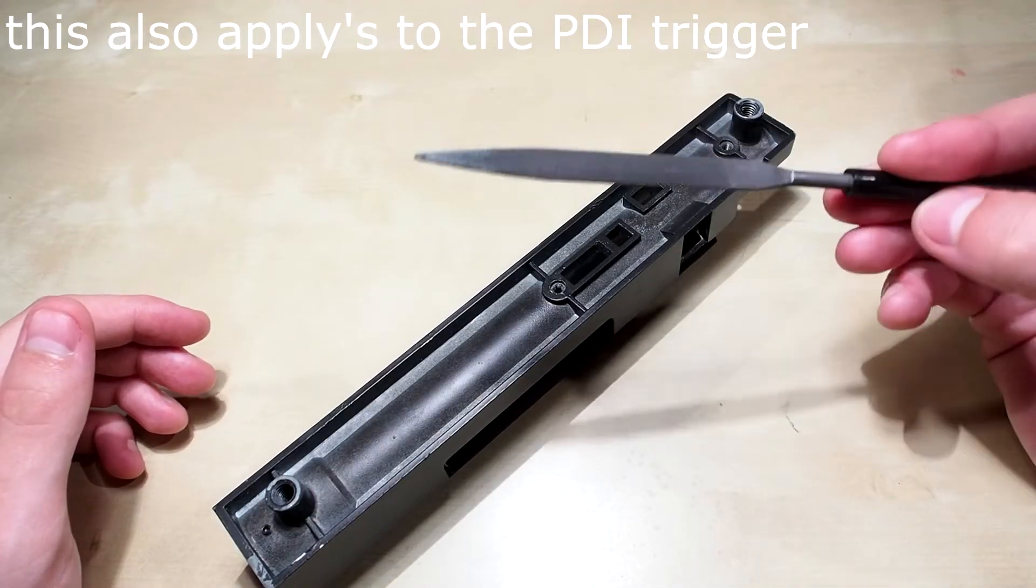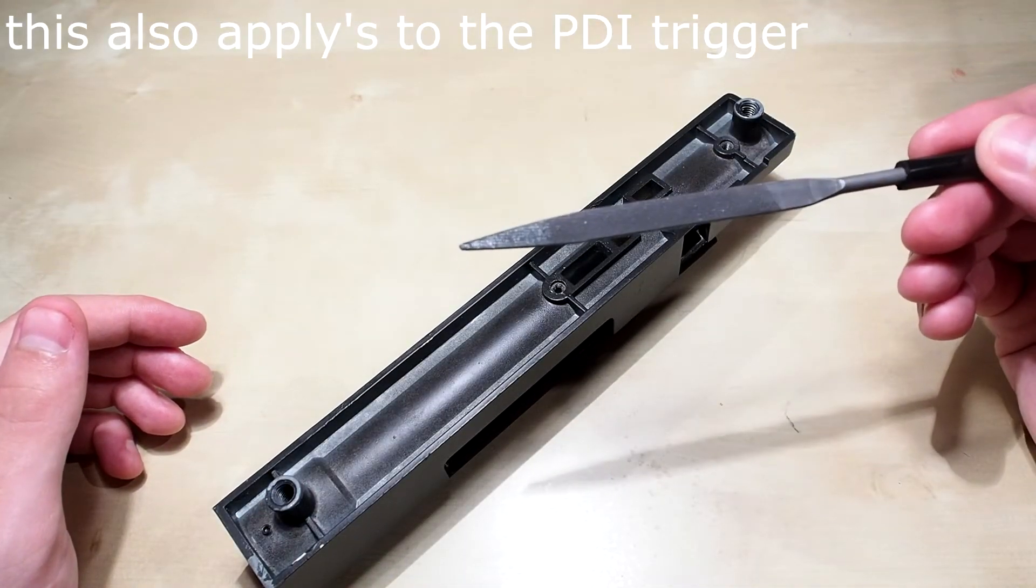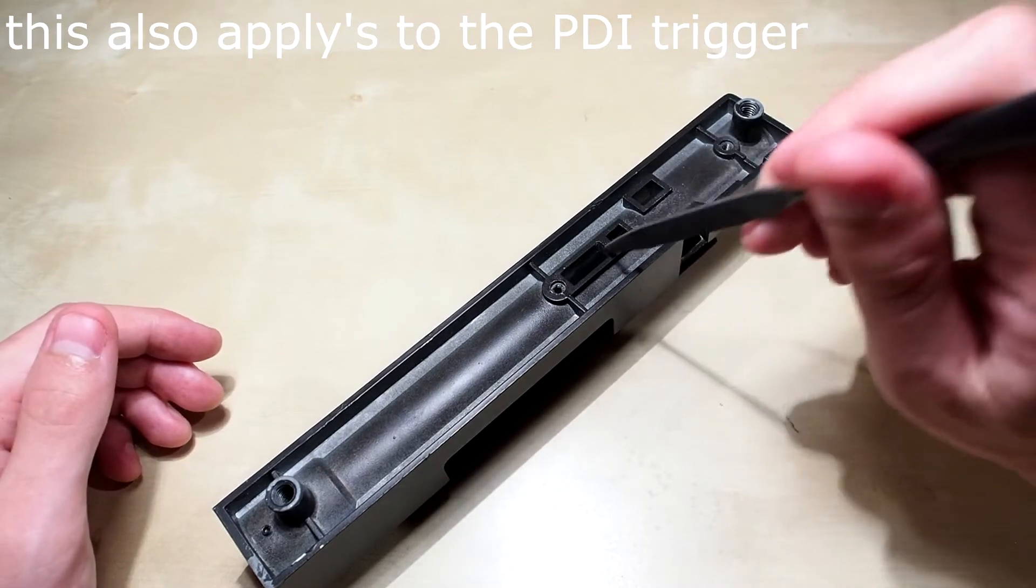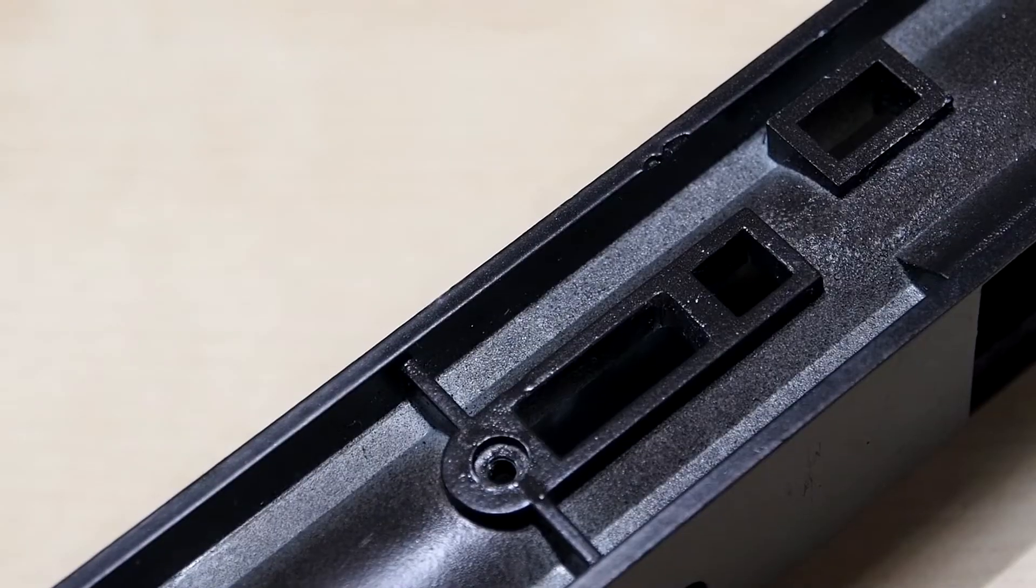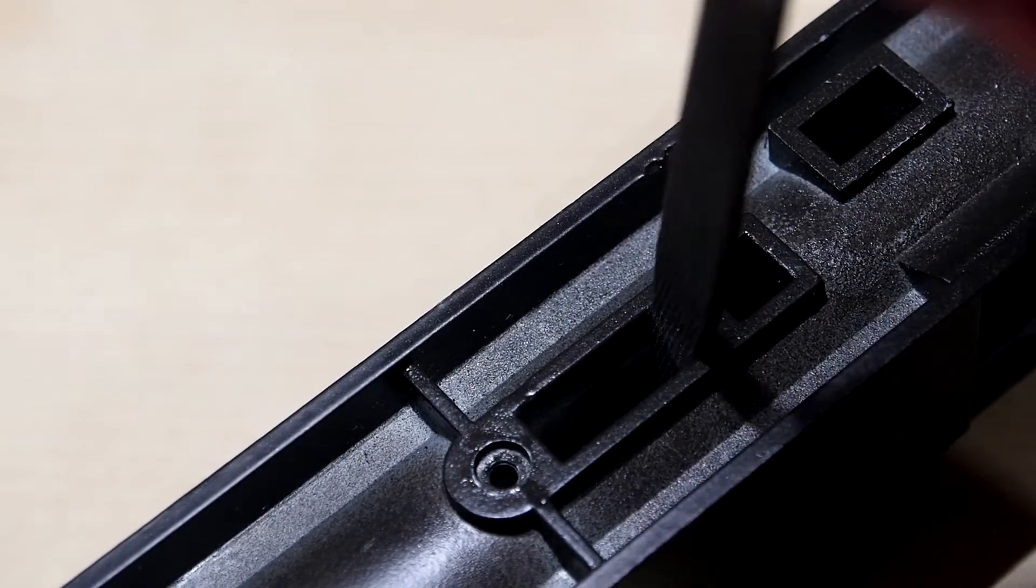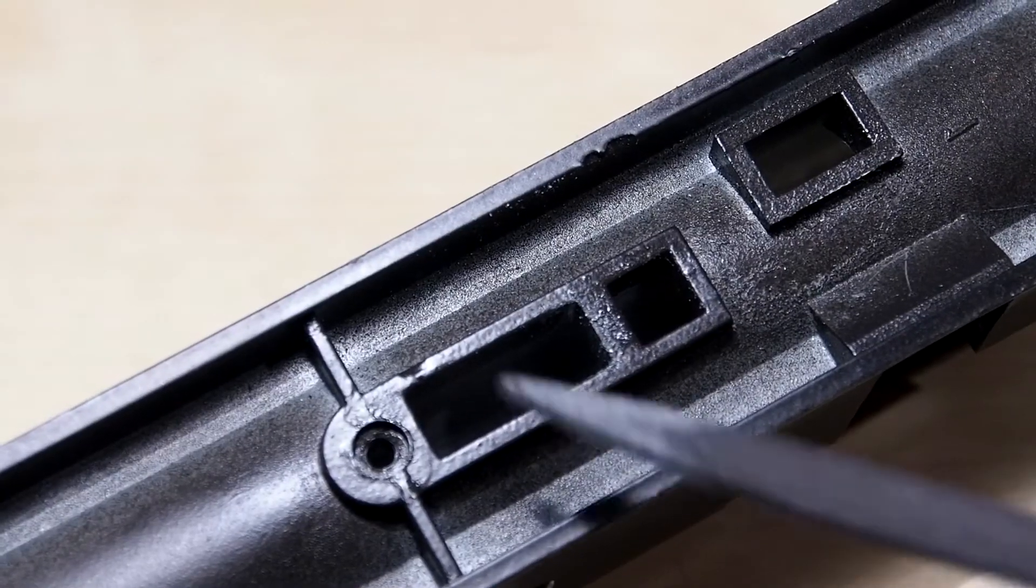Before installing the 90 degree trigger box you will have to file down some of the receiver in order for it to function properly. File down the hole about 1 to 1.5mm, this should enable the sear to go back all the way.